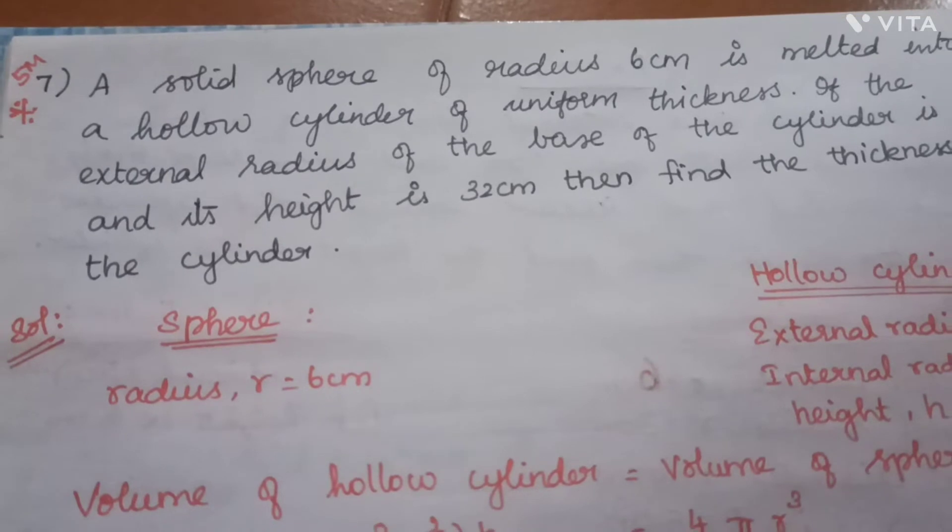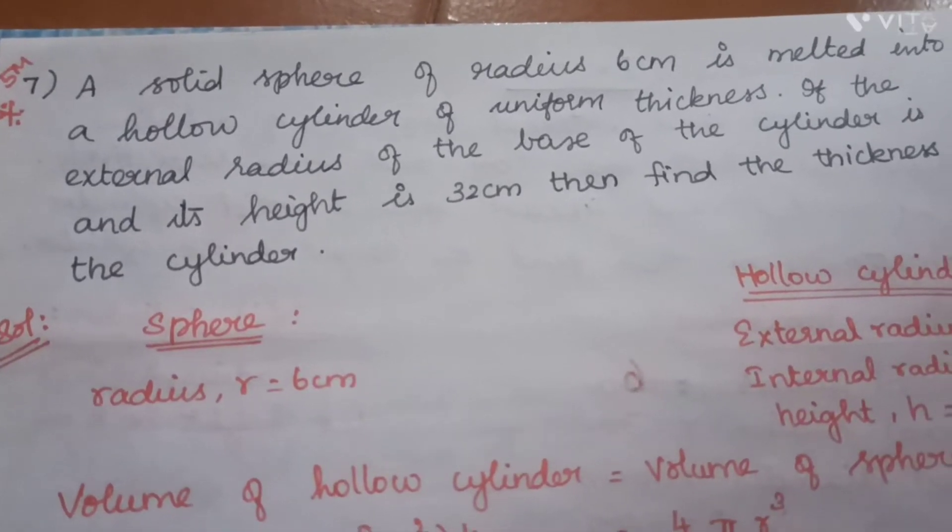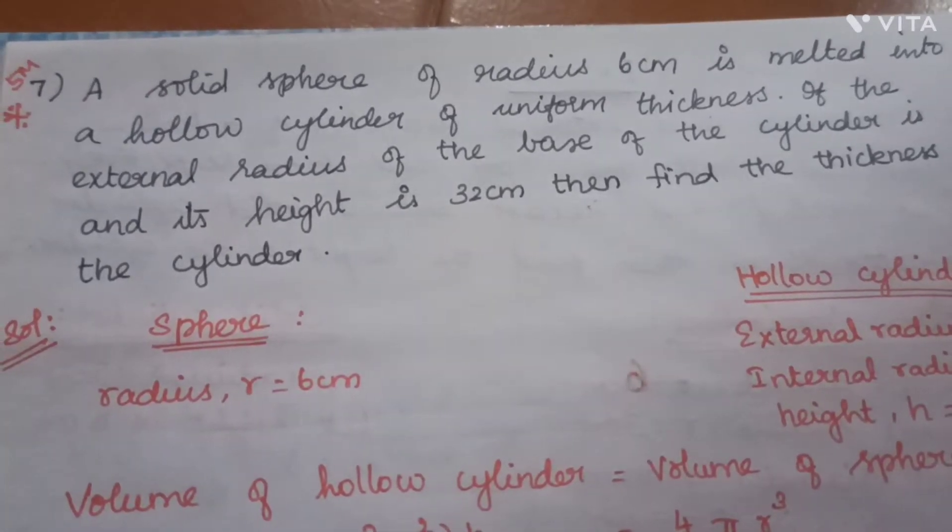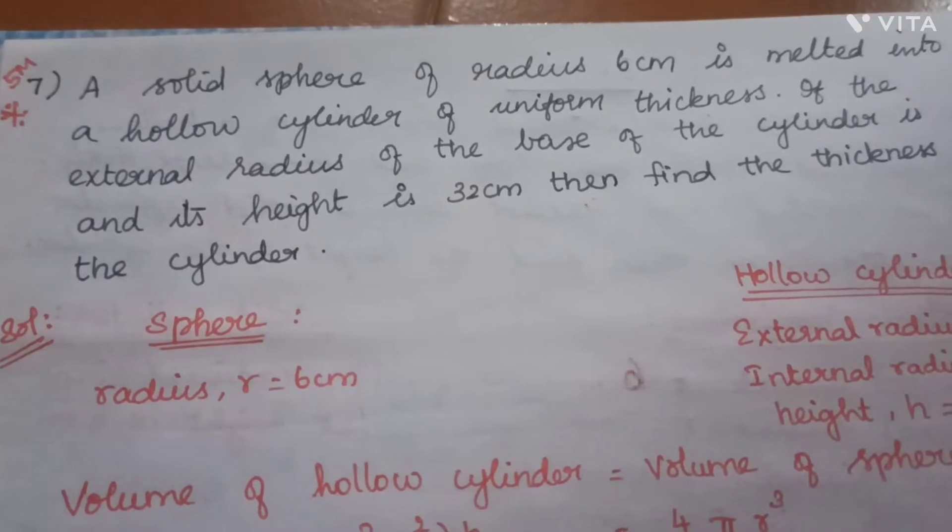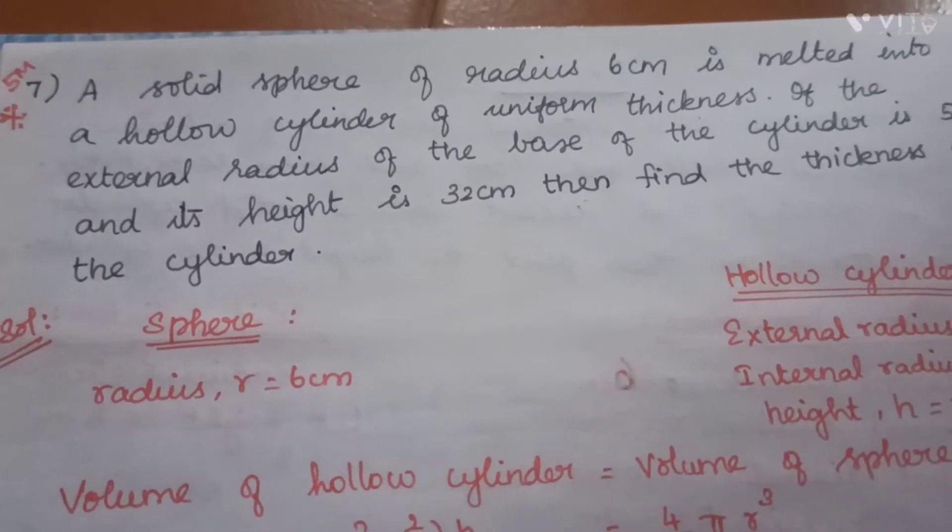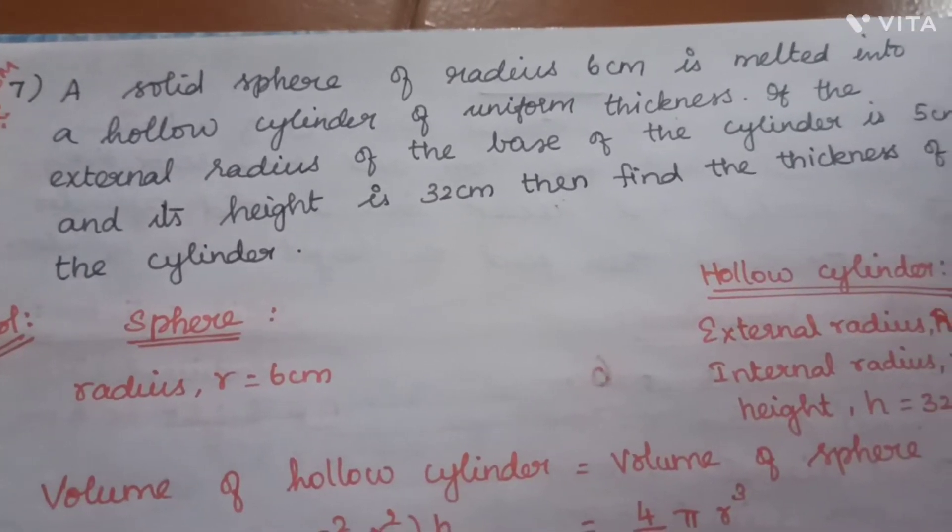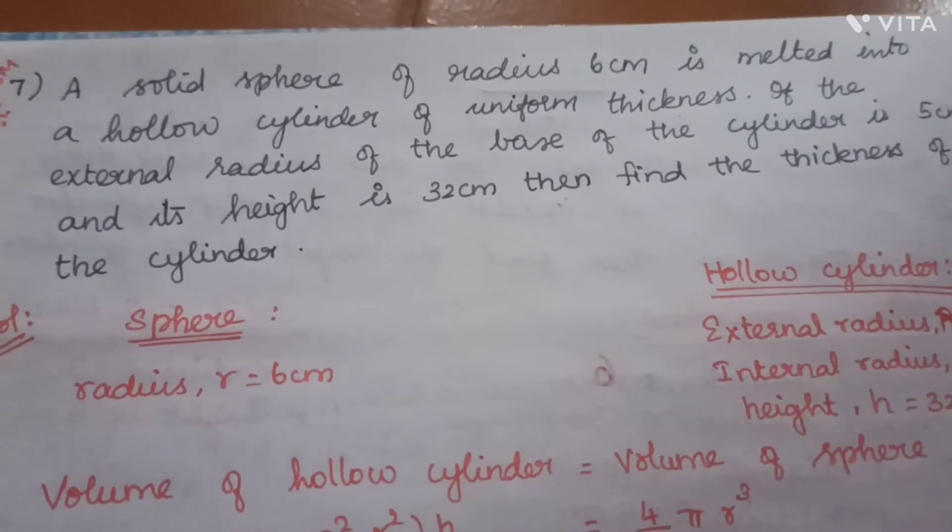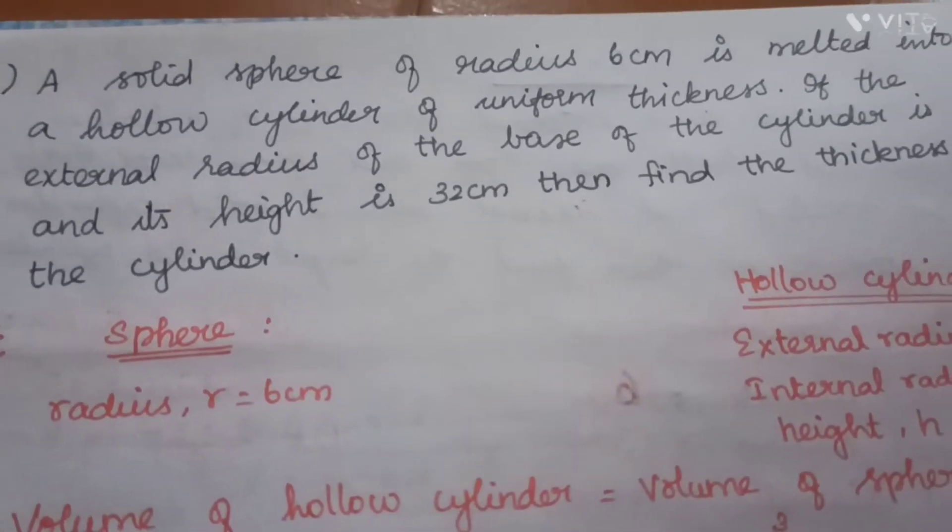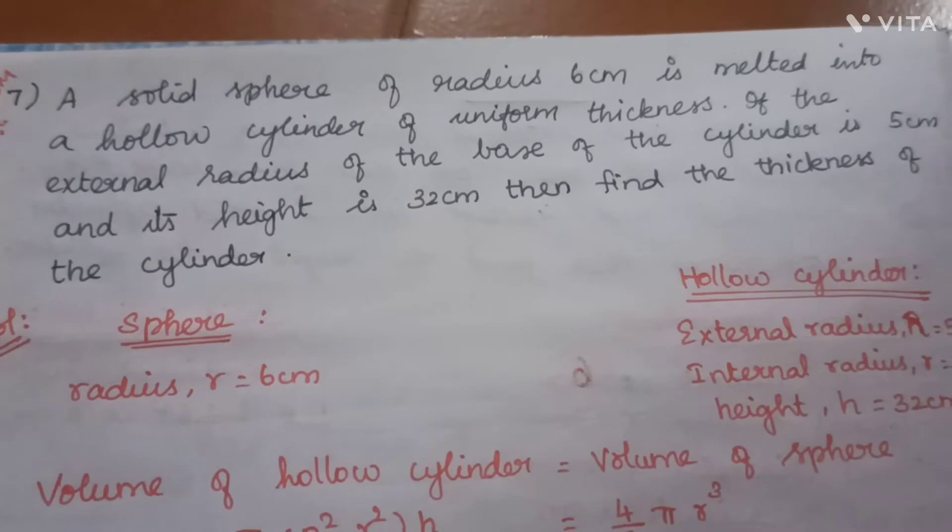A solid sphere of radius 6 cm is melted into a hollow cylinder of uniform thickness. If the external radius of the base of the cylinder is 5 cm and its height is 32 cm, then find the thickness of the cylinder.